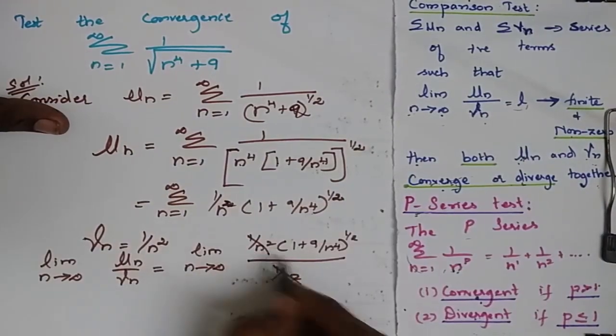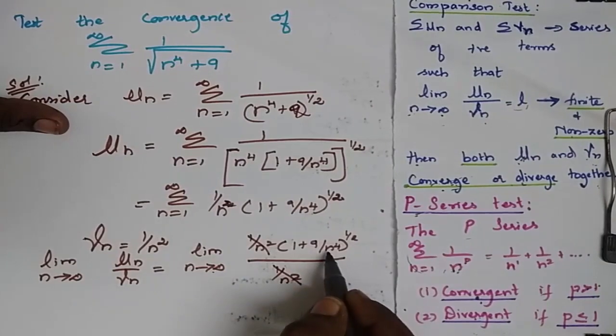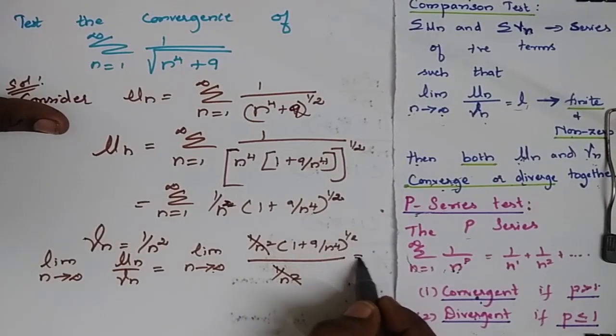I am going to cancel this and this. When I apply this infinity I will have 1 to the power 1 by 2 which is equal to 1. Finite and non-zero.